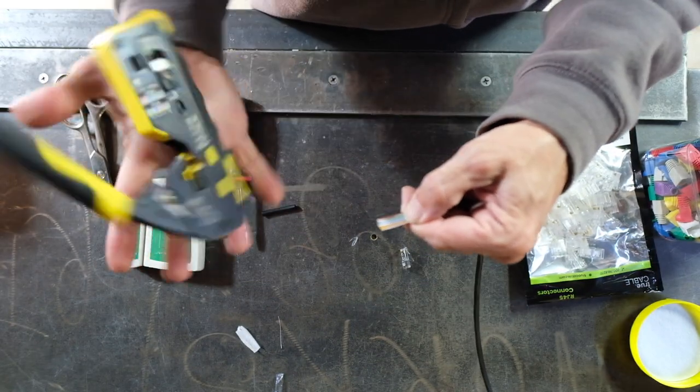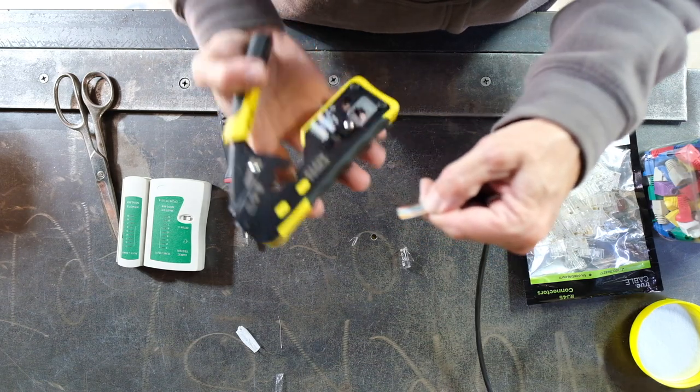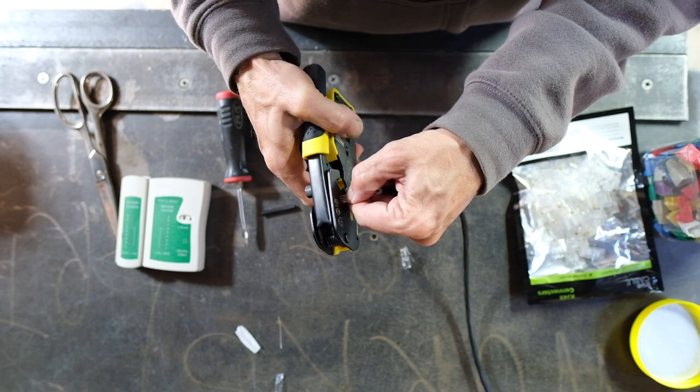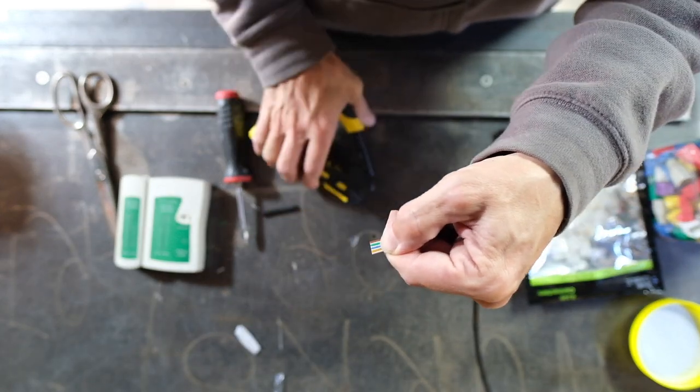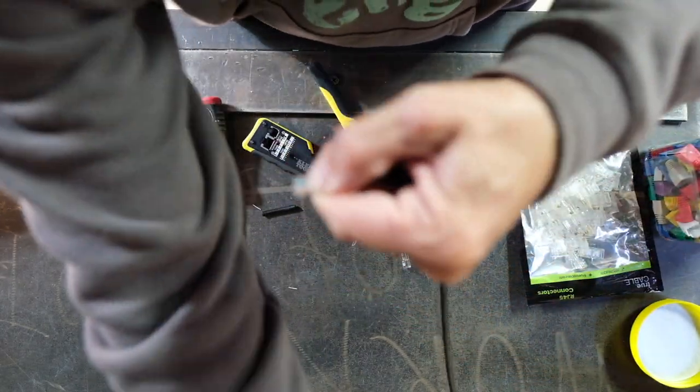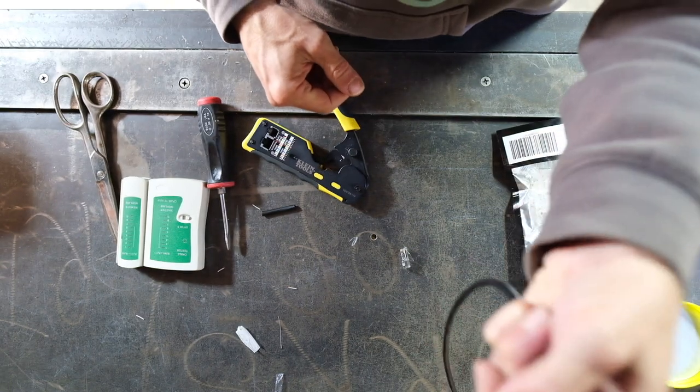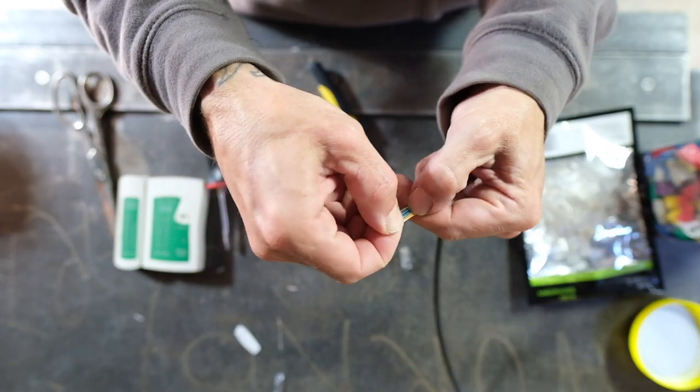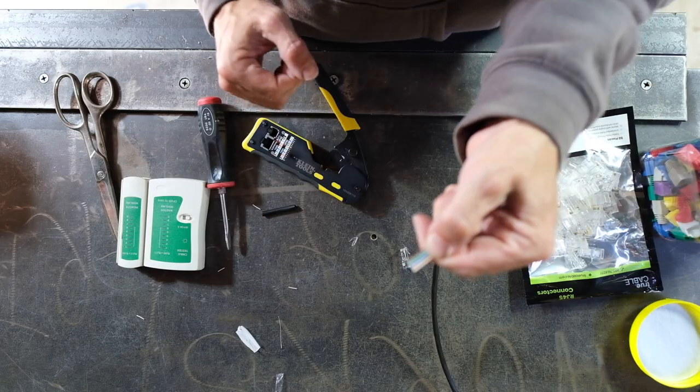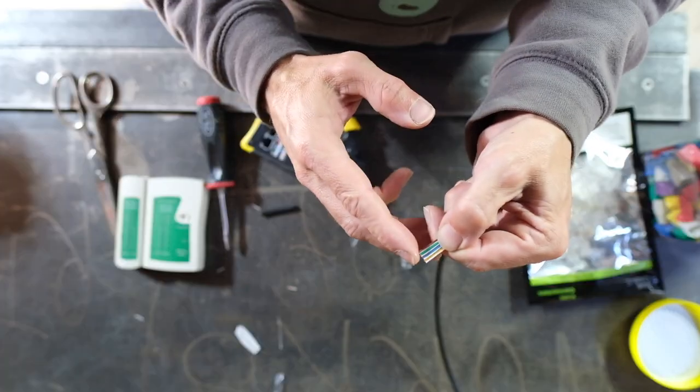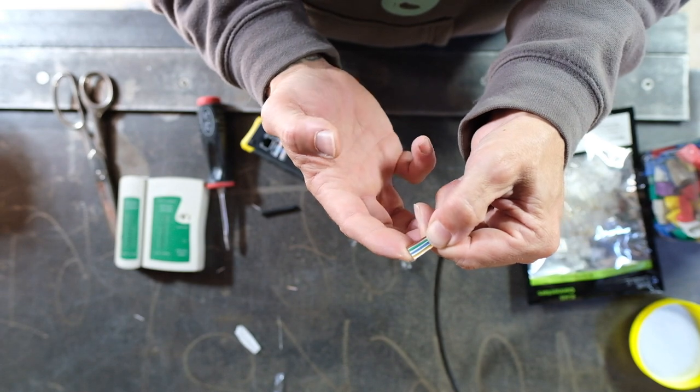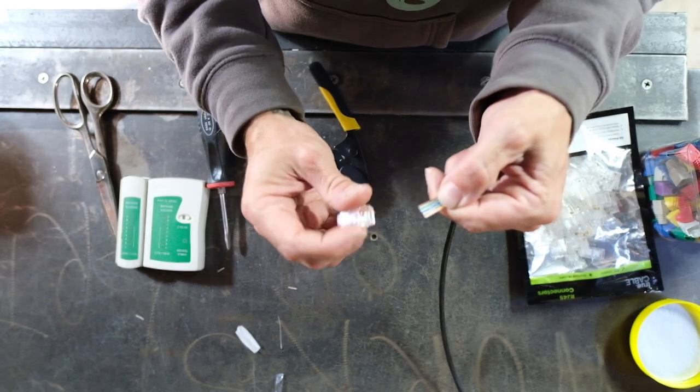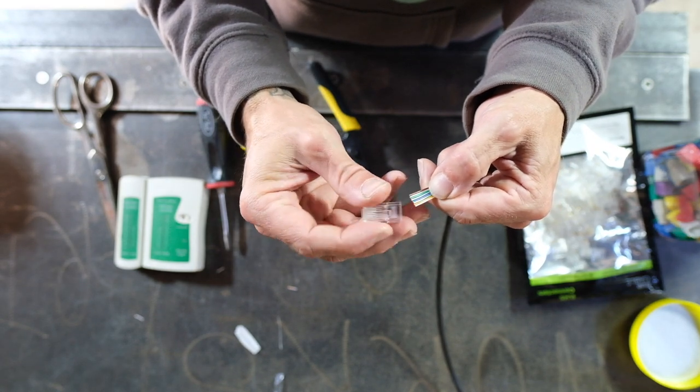We're going to cut these suckers off nice and straight. This has got a couple different cutting surfaces, you can see this one right here. And now we've got these nice and pretty straight. So orange white, orange, green white, blue, blue white, green, brown white, brown. You take your piece and you put it on.